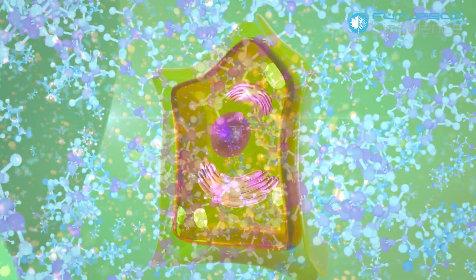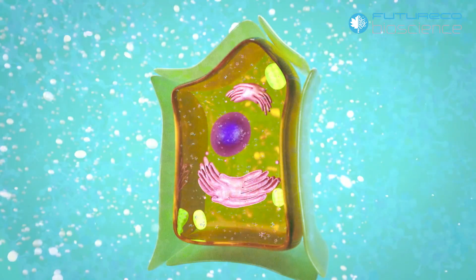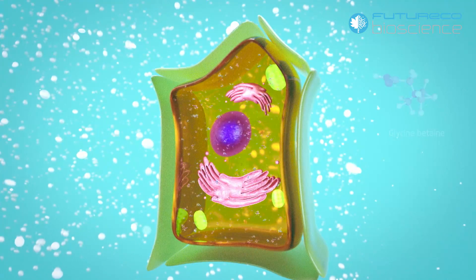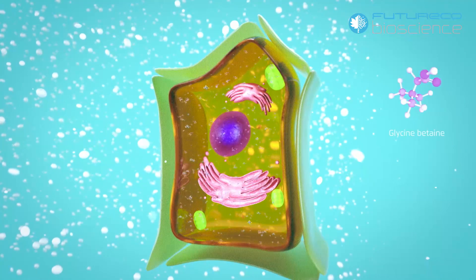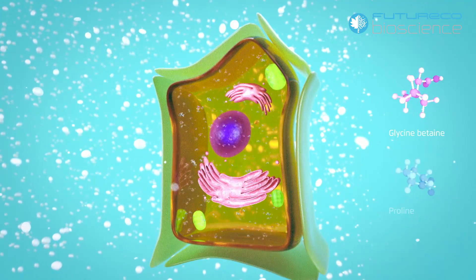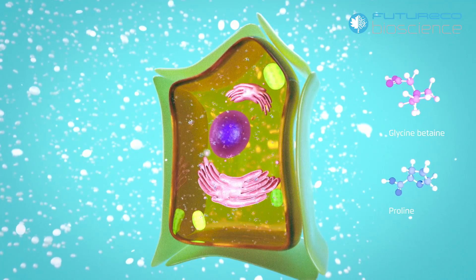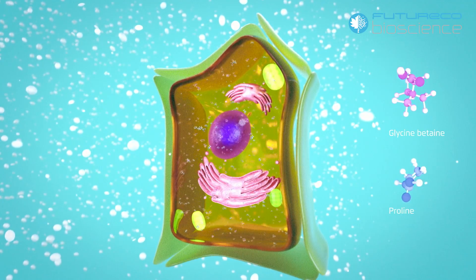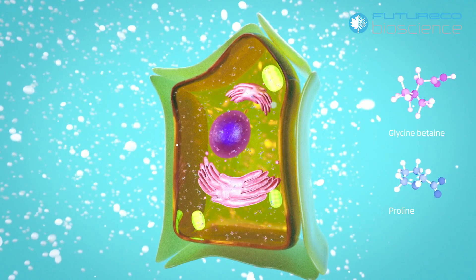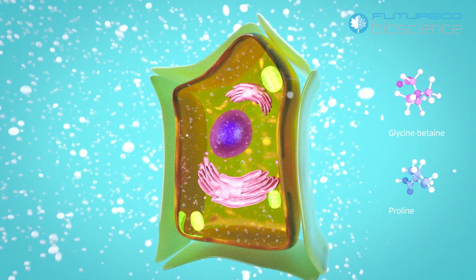These molecules protect the cells by regulating the osmotic potential in extreme conditions. Among these molecules, the most abundant are glycine-betaine and proline.